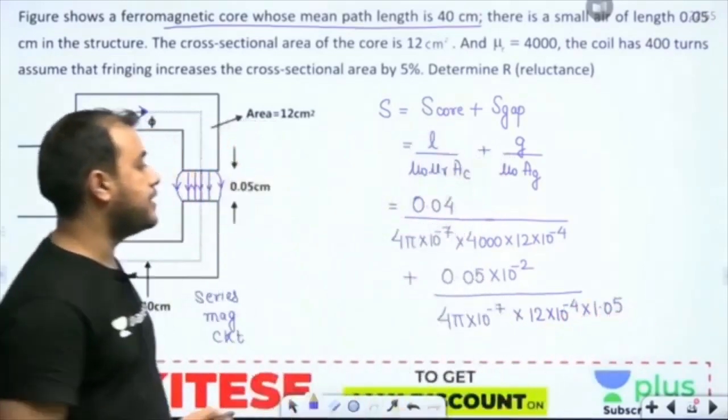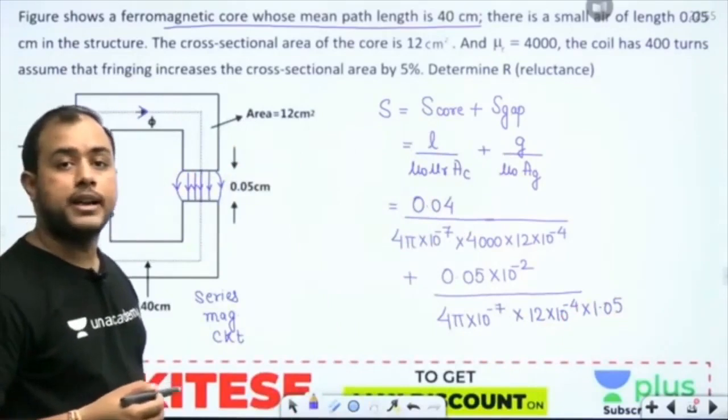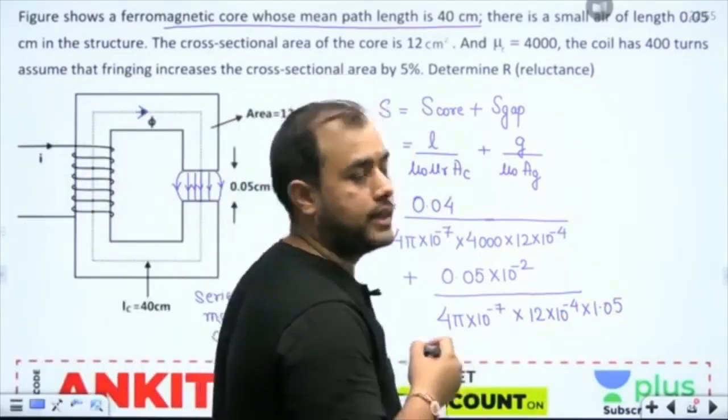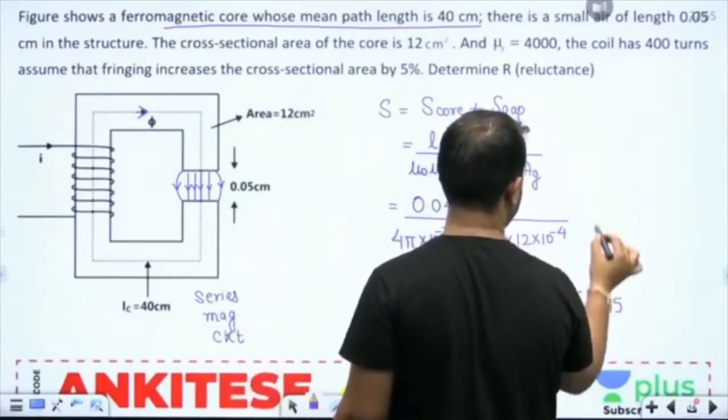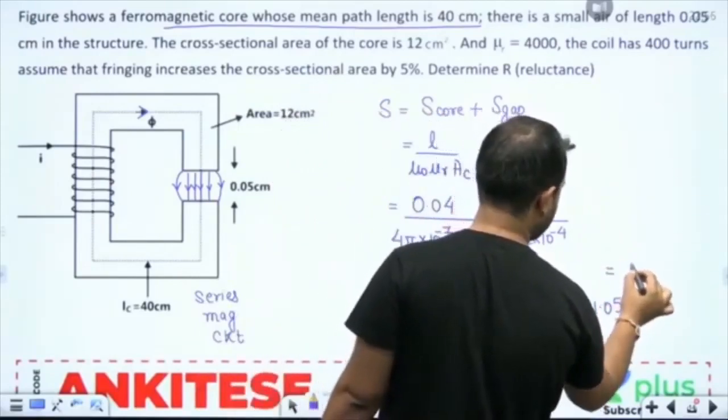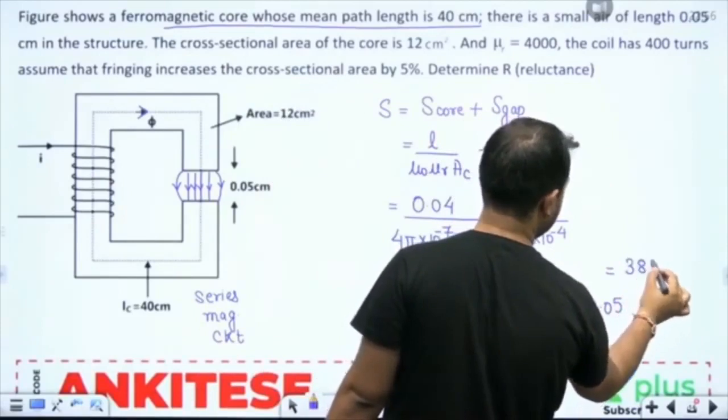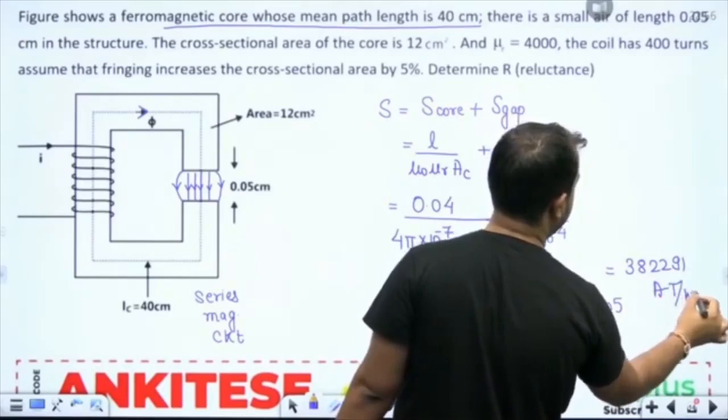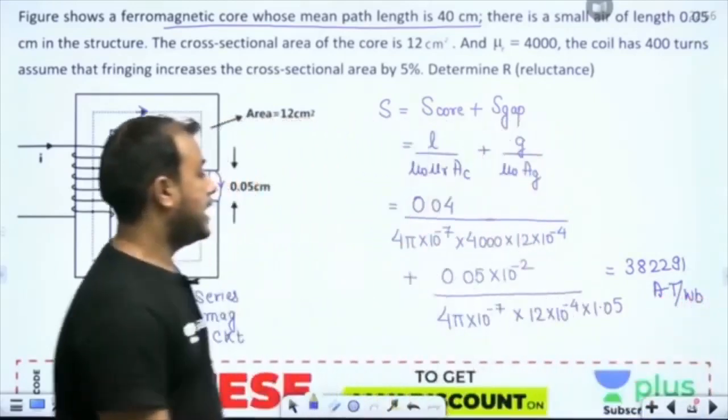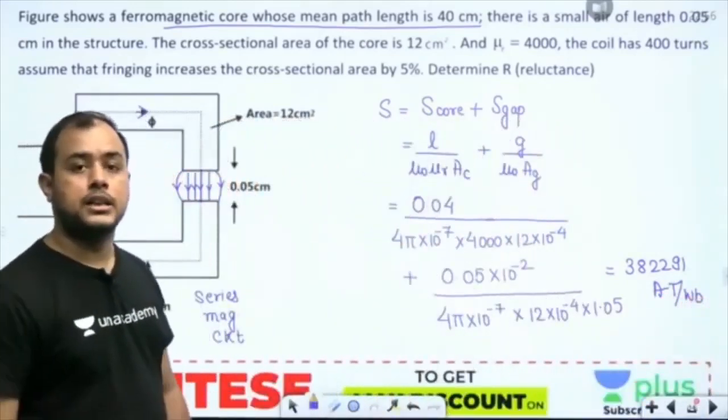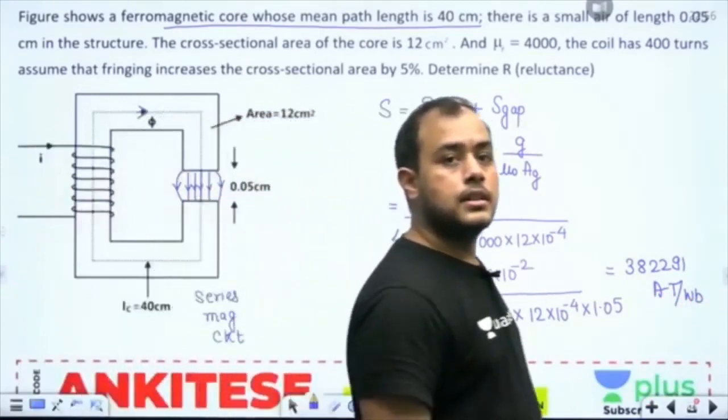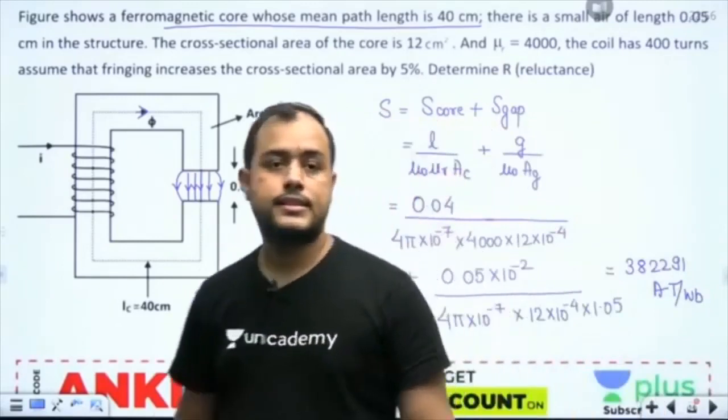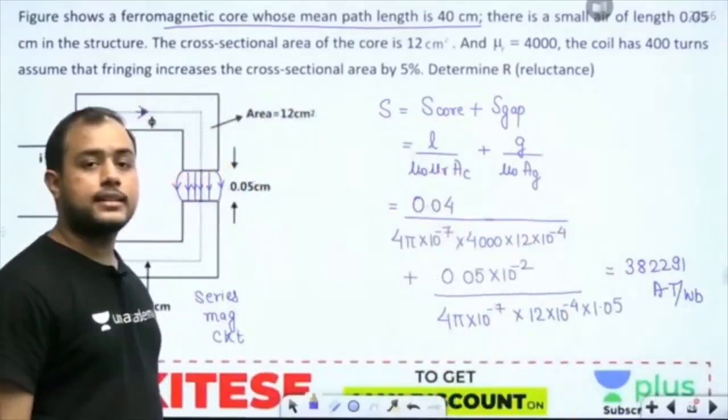So what is the answer everybody is getting? 382291. The unit of reluctance is ampere turns per Weber. So that is about this structure. Is that clear?